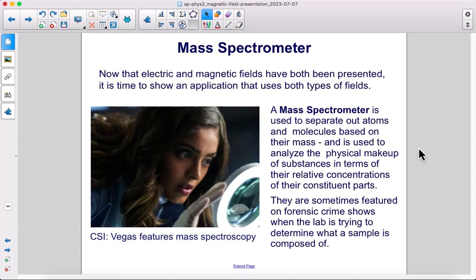A mass spectrometer is used to separate out atoms and molecules based on their mass, and is used to analyze the physical makeup of substances in terms of their relative concentrations of their constituent parts. They're sometimes featured on forensic crime shows when the lab is trying to determine what a sample is composed of. Here is a screenshot from CSI Vegas.